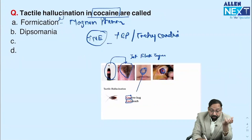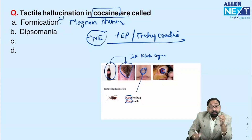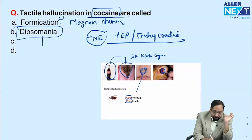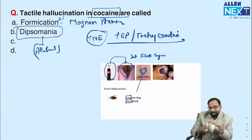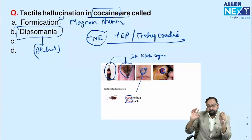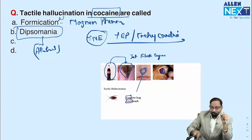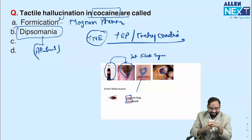The question asked which is NOT a side effect or symptom of cocaine toxicity. The answer was bradycardia. Also, dipsomania means an excessive desire to take alcohol — it is not a feature of cocaine intoxication.